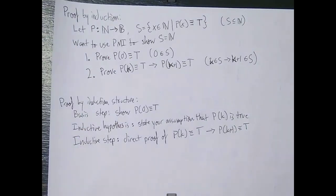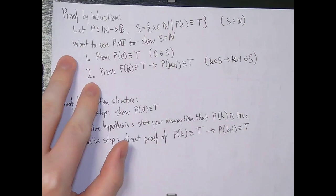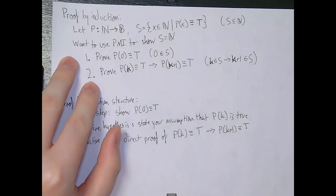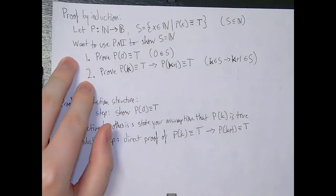We already know that S must be a subset of the natural numbers just because of the set-builder notation. Then we want to show that p of zero is true — which means that zero is in S — and show that if p of k is true then p of k plus one is true, which means that k being in S implies that k plus one is in S. So if we show that these two things are correct given our predicate, this means that S equals the natural numbers, meaning this predicate is true for every single natural number. That's the idea of proof by induction.